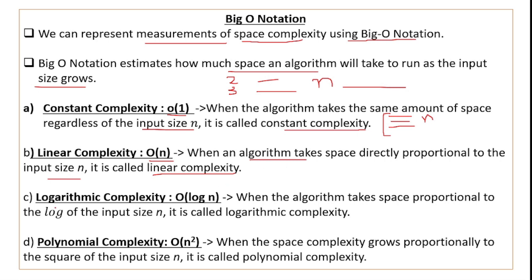Next we have logarithmic complexity. How do you pronounce this? Order log n, O(log n), or big O of log n. When the algorithm takes space proportional to the log of the input size n, it is called logarithmic complexity. The space occupied will be very low — almost half — compared to the input size.